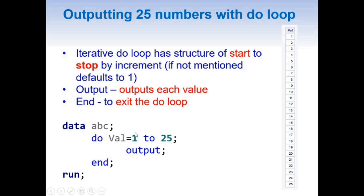The loop starts from 1, outputs that value, then goes back to the loop and increments by 1, outputs 2, increments one more, outputs 3 — and so on till 25. Finally it increments one more to get to 26, and since 26 is greater than the stop value of 25, it will not loop anymore and exits with the help of the END statement.